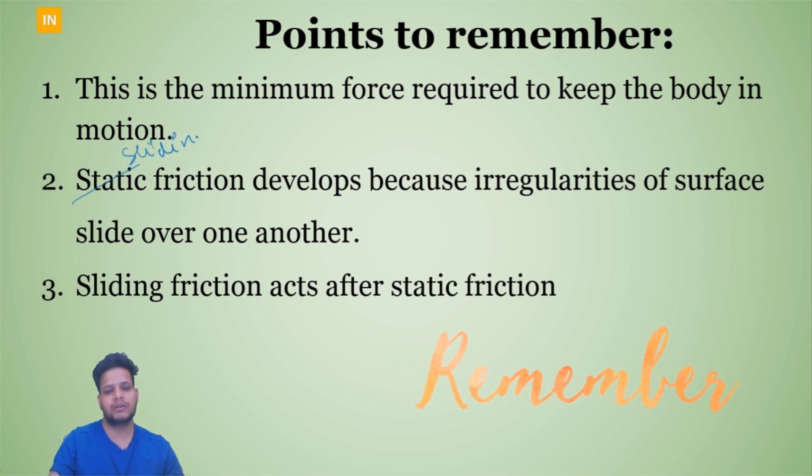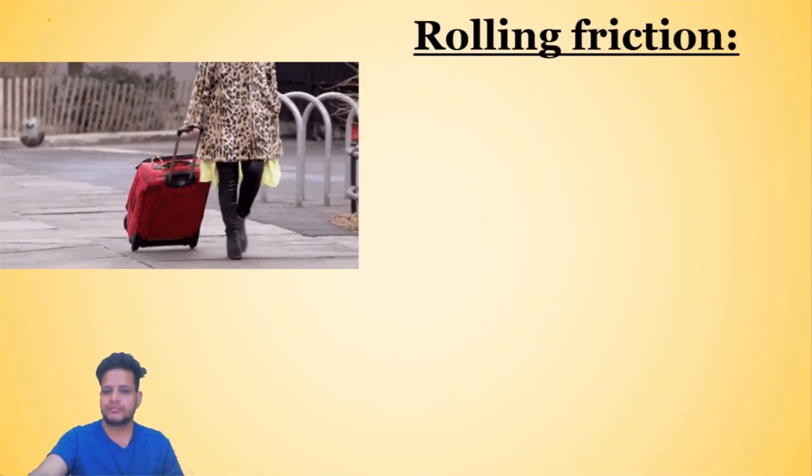Sliding friction is the minimum force required to keep the body in continuous motion. Sliding friction develops because the irregularities of surfaces slide over one another. When there's motion, there's some resistance. To overcome that resistance, we have to overcome sliding friction. First, you have to overcome static friction to start the movement. When static breaks, movement starts. When movement starts, irregularities slide over each other, and that's when sliding friction acts.